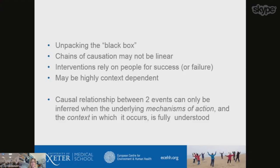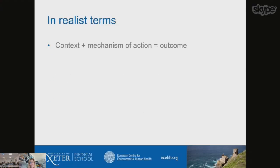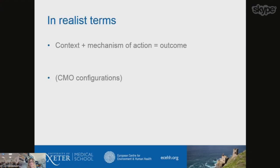These interventions may be very highly context dependent. One way of expressing this is that the causal relationship between two events can only be inferred where the underlying mechanisms of action and the context in which that mechanism occurs are fully understood. In realist terms, it is the mechanism of action within a specific context that leads to a particular outcome. The same outcome might be achieved through a different mechanism in a different context. You sometimes hear these referred to as CMO configurations — Context Mechanism Outcome configurations — which is one way that people talk about realist reviews and realist evaluations.